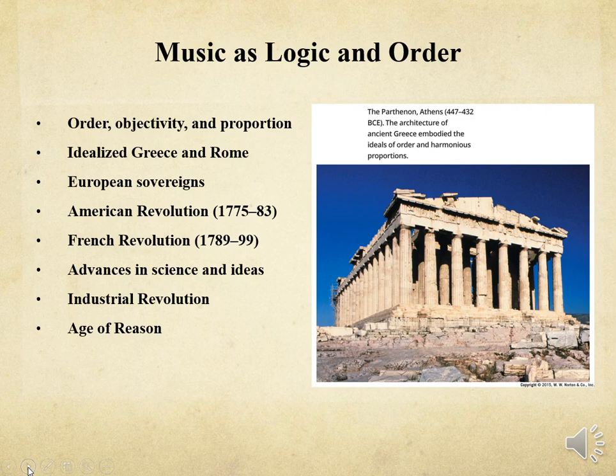The Industrial Revolution contributed to the wealth of the middle class. Inventions included the improved steam engine, spinning jenny, and cotton gin. Advances in science improved the human condition as well. Benjamin Franklin harnessed electricity, Joseph Priestley discovered oxygen, and Edward Jenner perfected vaccination.